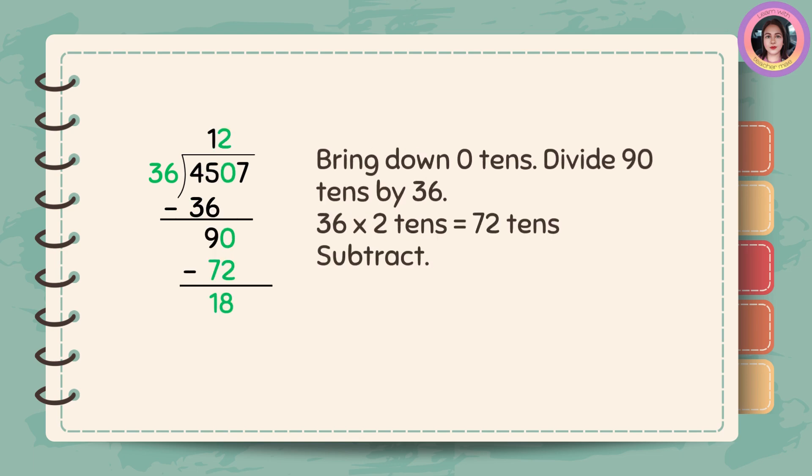Bring down 0 tenths. Divide 90 tenths by 36. 36 times 2 tenths is equal to 72 tenths. And then subtract. 90 minus 72 is 18.